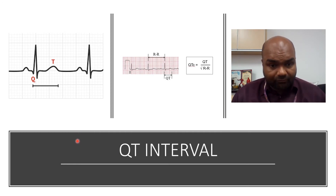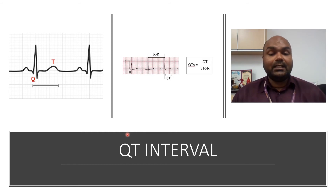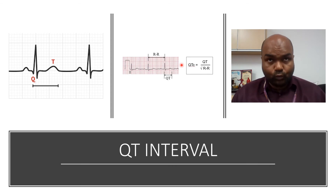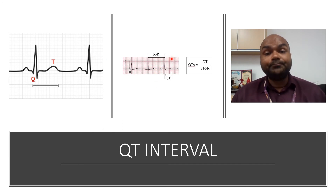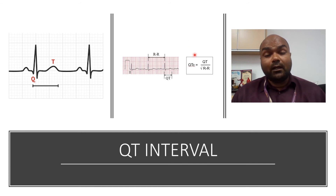To calculate QTc, first measure the QT in seconds. Here, the QT is approximately nine small boxes: nine times 0.04 equals 0.36 seconds. Next, calculate the RR interval — the time from one R wave to the next. Here it is four big boxes: four times 0.2 equals 0.8 seconds. The formula is: QTc equals QT in seconds divided by the square root of the RR interval in seconds.